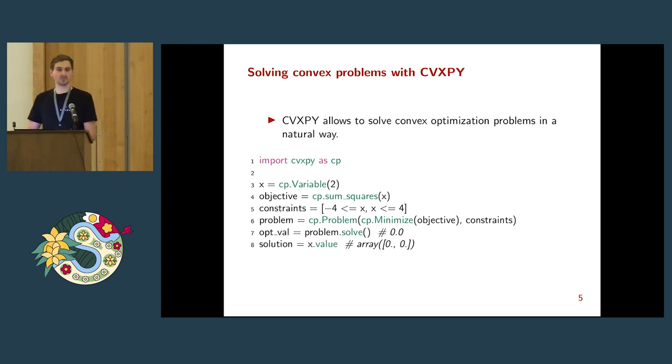Then you define a problem by saying I want to minimize my objective function subject to these constraints. Then you call solve, and CVXPY will compile your problem to a standard form, call an appropriate solver, and bring you back a solution and optimal value. As you can see, it mixes in quite well with regular Python code. You can ask what is the value of my variable, you can call solve method.